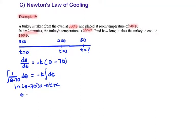By using anti-log, we have θ minus 70 equals e raised to the power negative kt times e to the c, where e to the c is a constant equal to A times e to the negative kt. Plus 70 both sides is equal to θ.